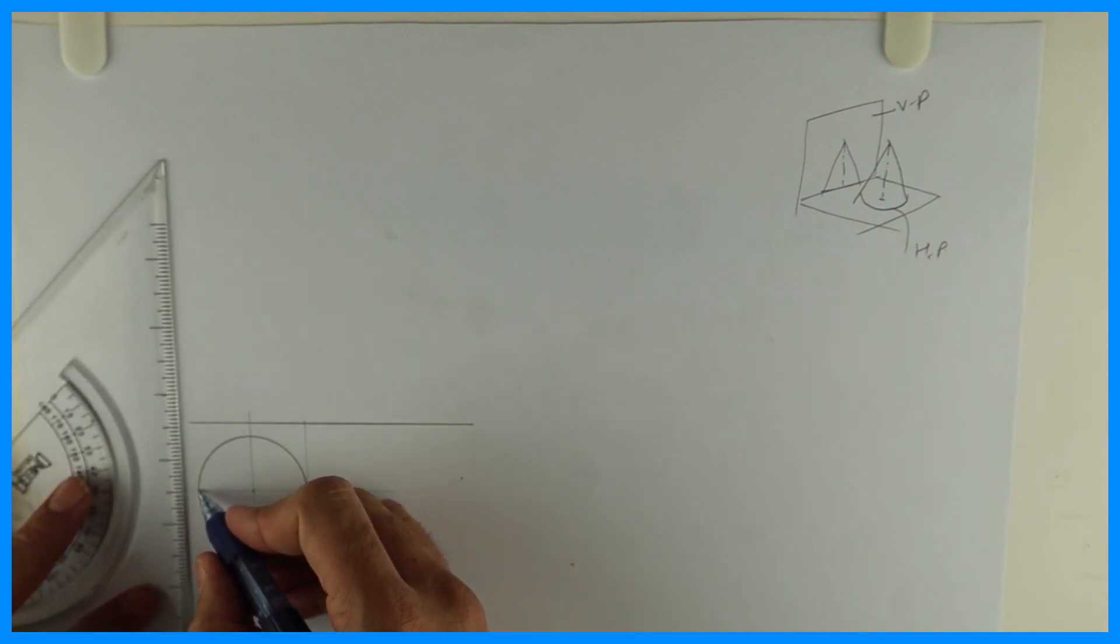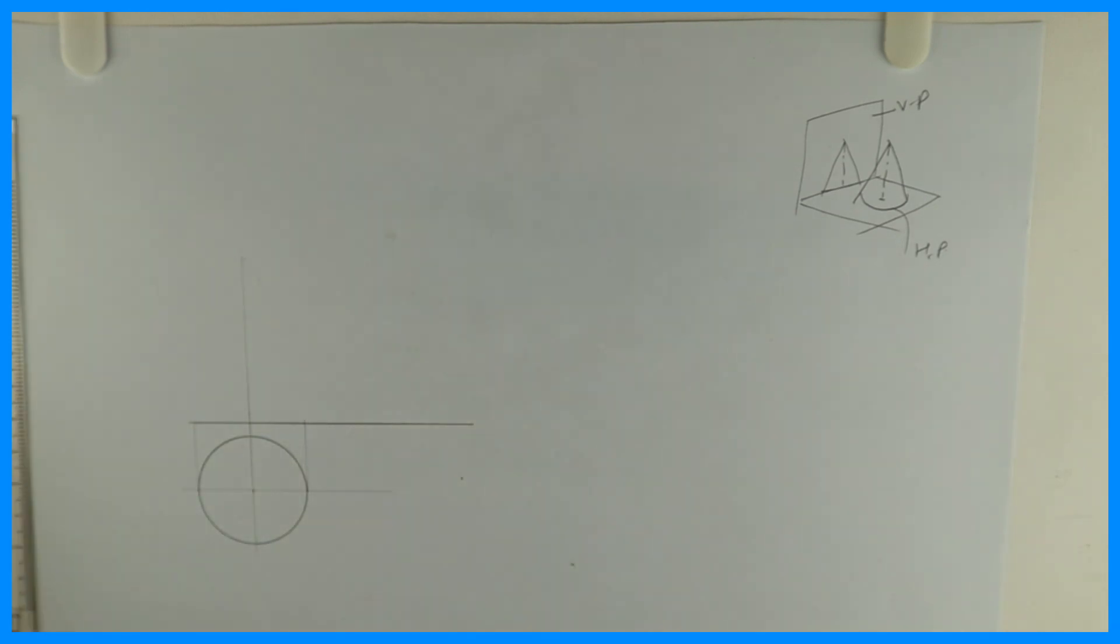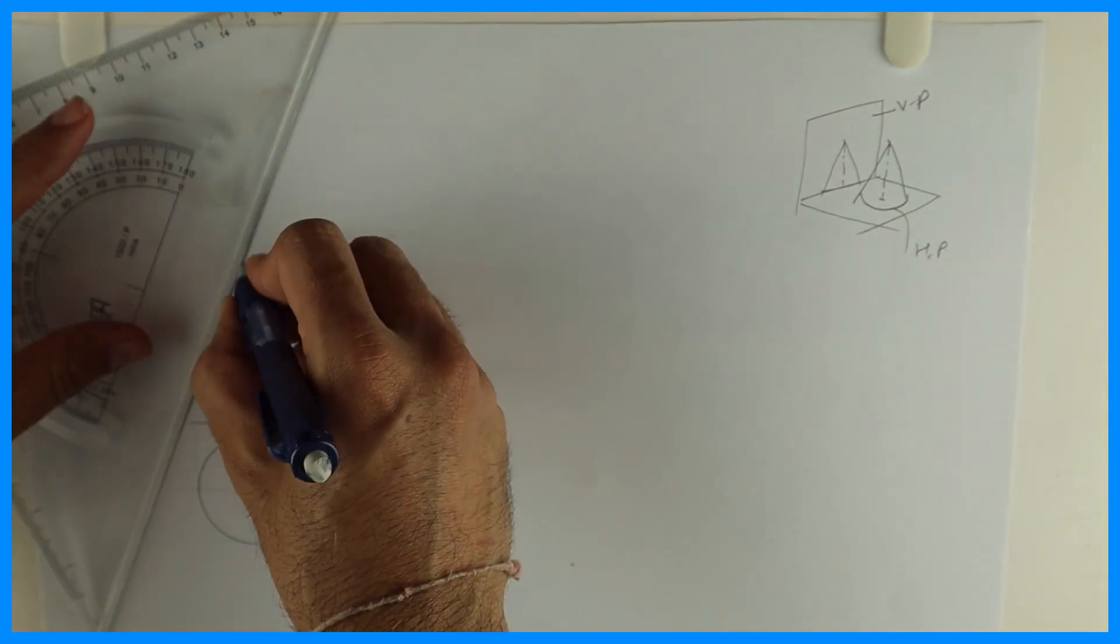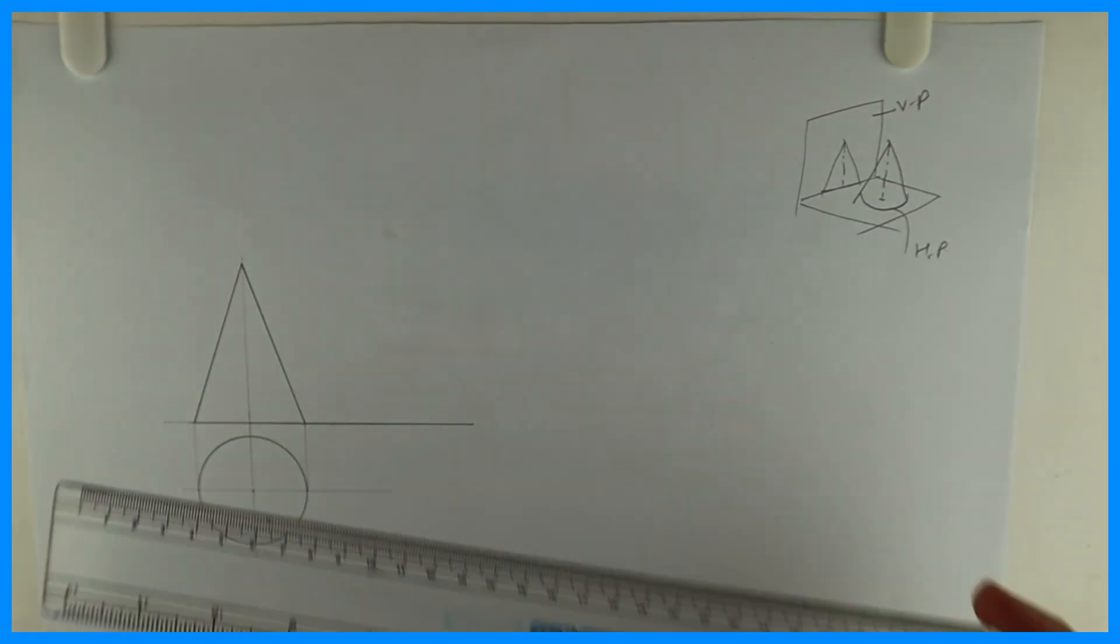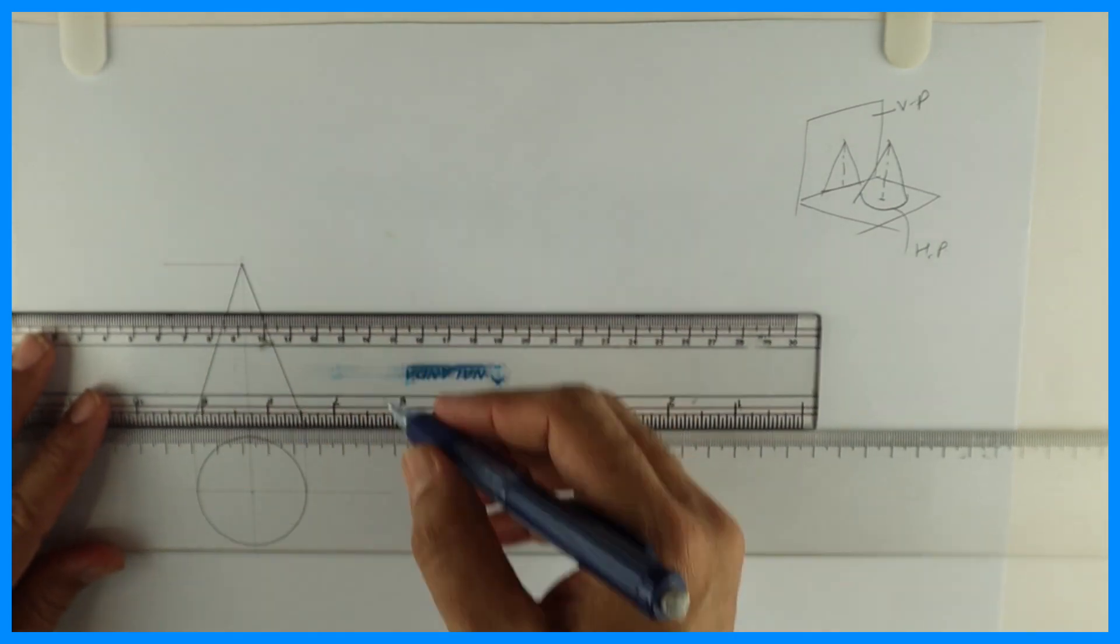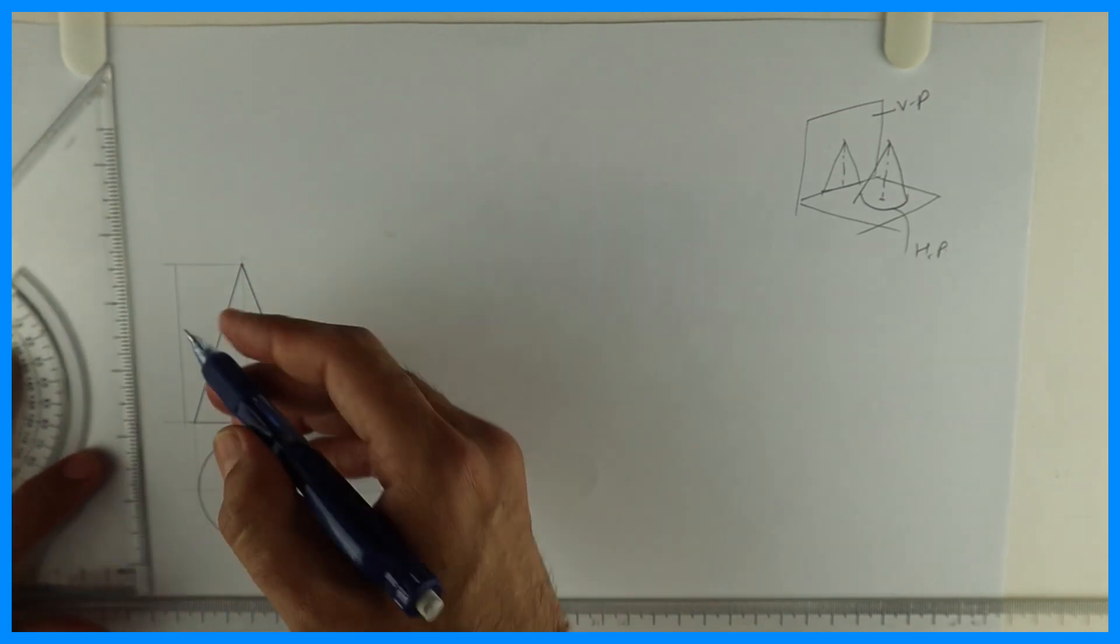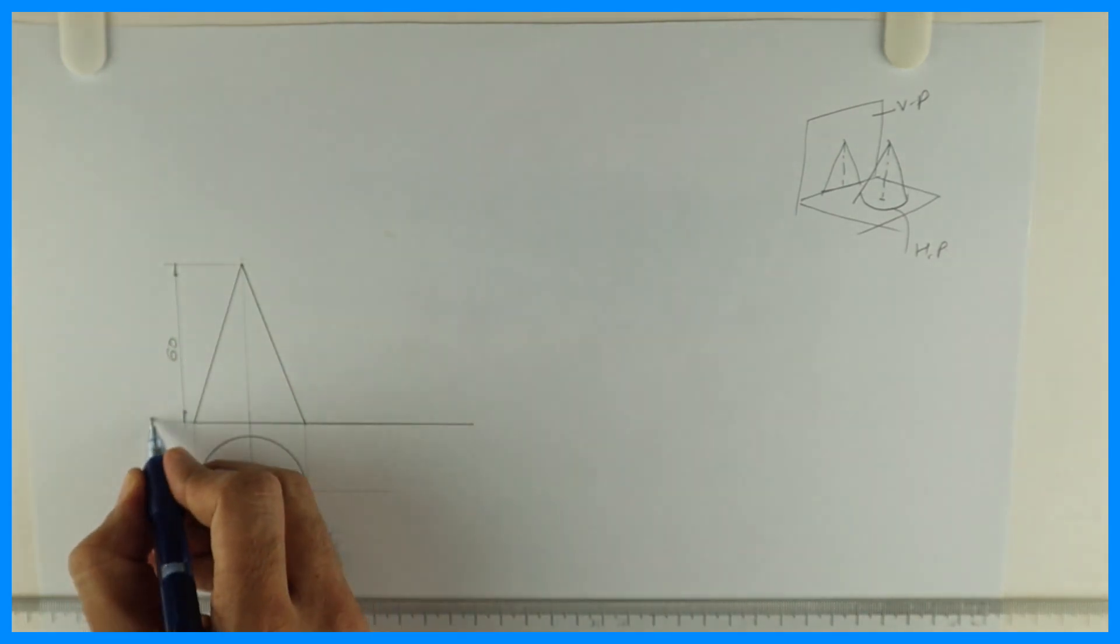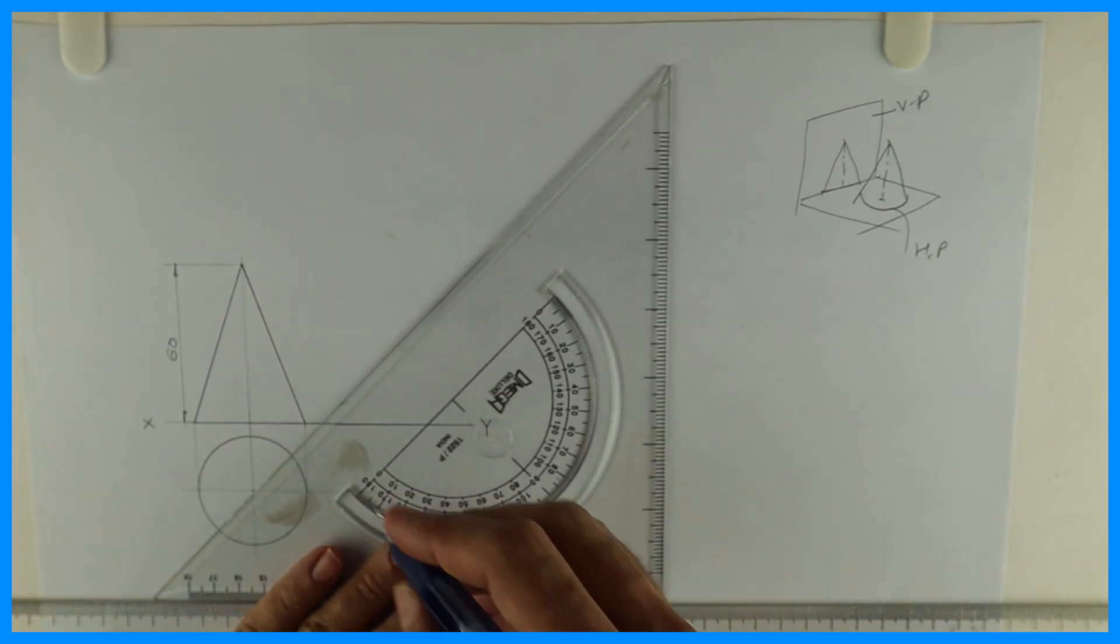After that we will take all this extreme line up, axis line up, height which is 60. Then you mark dimensioning. We will write XY, diameter is 42.